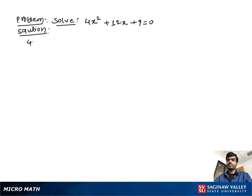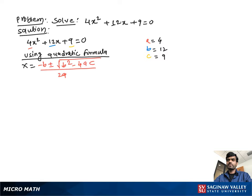Solve 4x square plus 12x plus 9 equal to 0. It is a standard form of quadratic equation, so we determine the value of a, b, c: a equal 4, b equal 12, c equal 9.